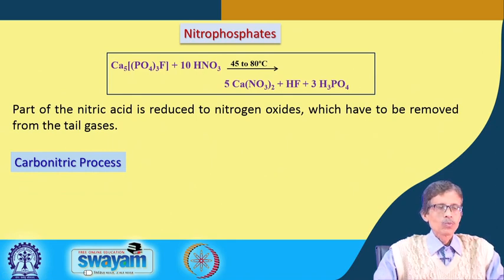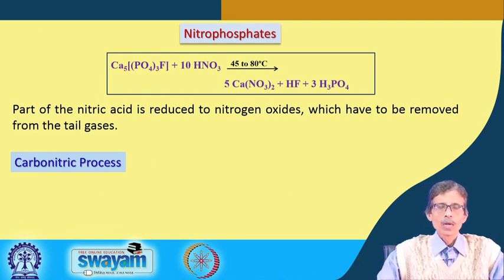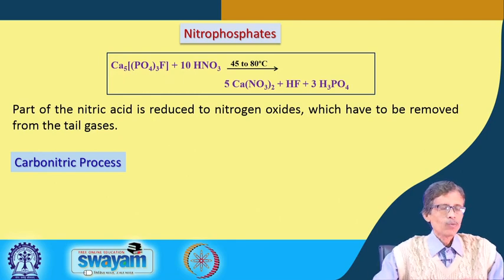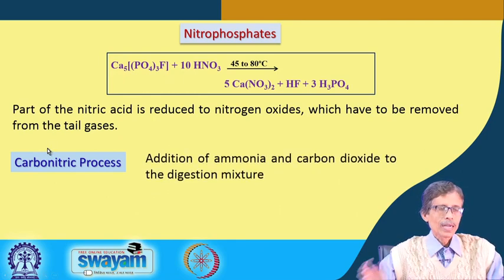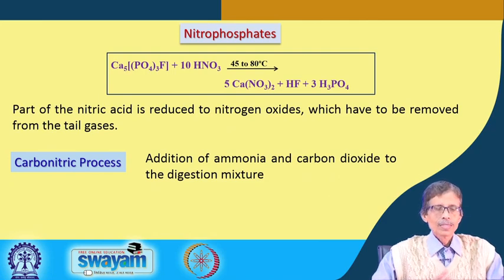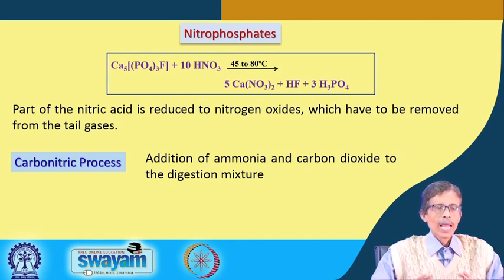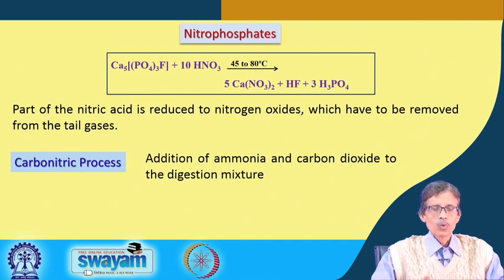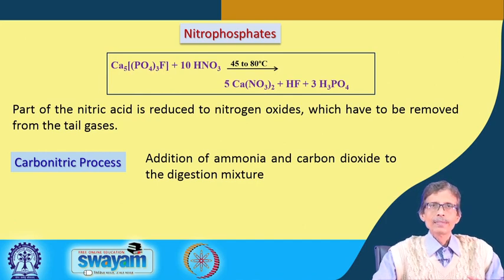One industrially important process is the carbonitric process, which involves the formation of nitrates. The 'carbo' part refers to carbon dioxide, and the 'nitric' part refers to nitric acid or nitrate. In the carbonitric process, ammonia is added to carbon dioxide, or carbon dioxide is passed into ammonia, in a digestion chamber.